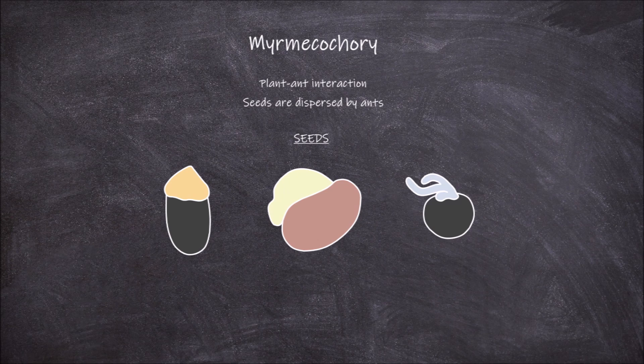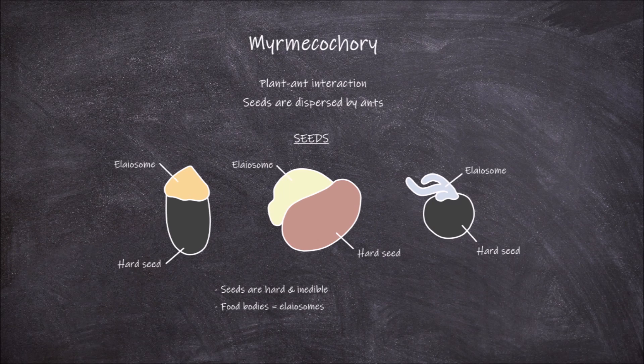These types of plants produce seeds that are hard, as it makes them inedible to the ants dispersing them. These hard seeds also possess a food body called an elaiosome. These elaiosomes vary in shape, colour and size in the different plant species producing them. These food bodies contain important nutrients in the form of carbohydrates, proteins and lipids.